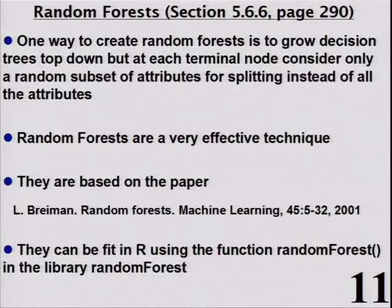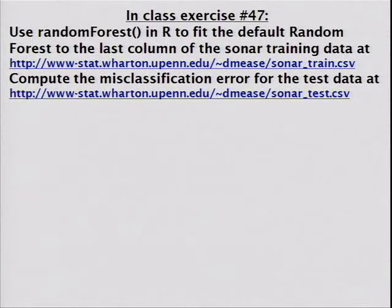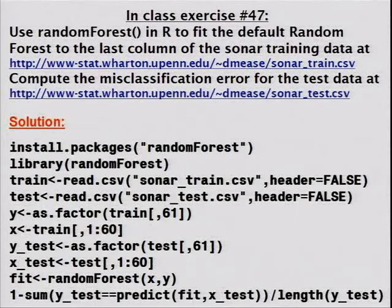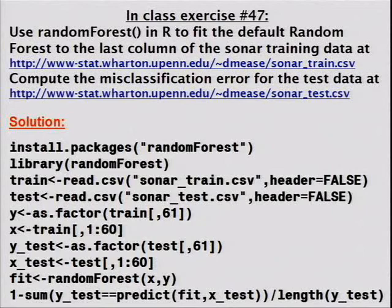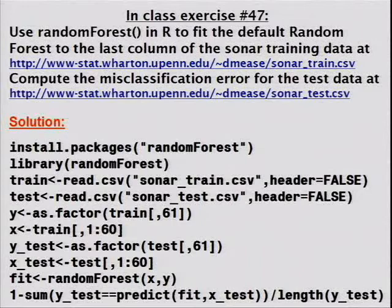Looking at the sonar data set, I can fit a random forest: install randomForest, do library randomForest, read in the training and test data. I want Y as a factor so R knows the 61st column is the categorical response. Then I say fit = randomForest(X, Y), give training X's and Y's, and use the predict function on the test data to compute the misclassification error rate.